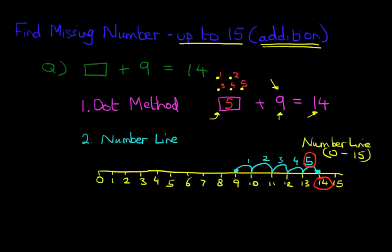I just want to point something out here. The dot method, we got to the answer 5. Now the number line, we've also got to 5. So two different methods, but we've got to the same answer.